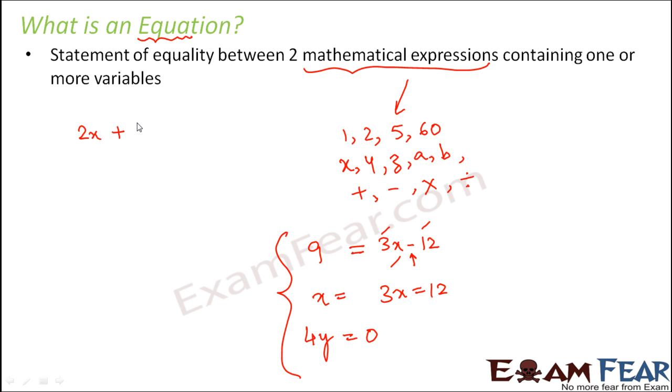For example, 2x plus 9 by 2 is equal to 5y. This is an example of an equation because you have the equality sign which says that whatever you see on this side and whatever you see on this side, they are equal. Now, again, it is not necessary that an equation can have only one variable. It can have one or more variables. For example, here you have two variables, x and y. Similarly, you can even have more than two variables. For example, a plus 3b is equal to 5c. So here you have three variables involved. Something like this, where you just have one variable involved. That is also an equation. So all of these are examples of equation.